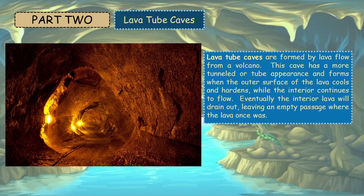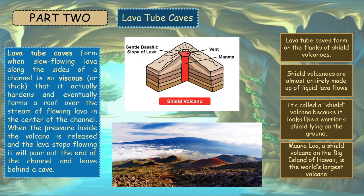Lava tube caves are formed by lava flow from a volcano. This cave has a more tunneled, or tube, appearance, and forms when the outer surface of the lava cools and hardens while the interior continues to flow. Eventually, the interior lava will drain out, leaving an empty passage where the lava once was. Lava tube caves form when slow-flowing lava along the sides of a channel is so viscous, or thick, that it actually hardens and eventually forms a roof over the stream of flowing lava in the center of the channel. When the pressure inside the volcano is released and the lava stops flowing, it will pour out the end of the channel and leave behind a cave.